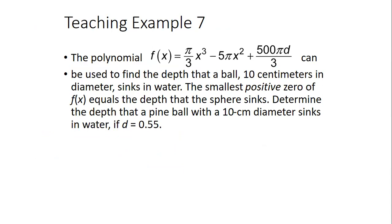Here we have an example of a word problem that is showing that this is a function that can be used to measure the depth that a ball 10 centimeters in diameter sinks in water. The smallest positive zero of f of x equals the depth that the sphere sinks. Determine the depth that a pine ball with a 10 centimeter diameter sinks in water, if d = 0.55. This is an example of just purely setting it up and taking given information from the word problem and plugging in where it goes.